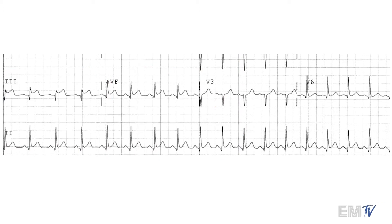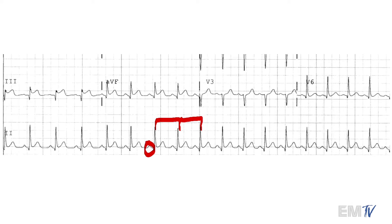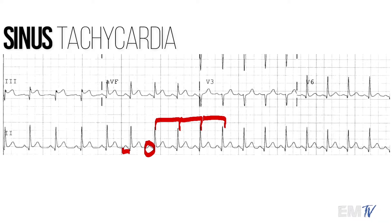Let's examine the rhythm more closely. I'm looking at a rhythm with a P wave, a QRS complex which is narrow, and the R-to-R intervals appear very consistent, so it's nice and regular. The P-to-R interval is less than 0.2 seconds. So I would call this sinus tachycardia.